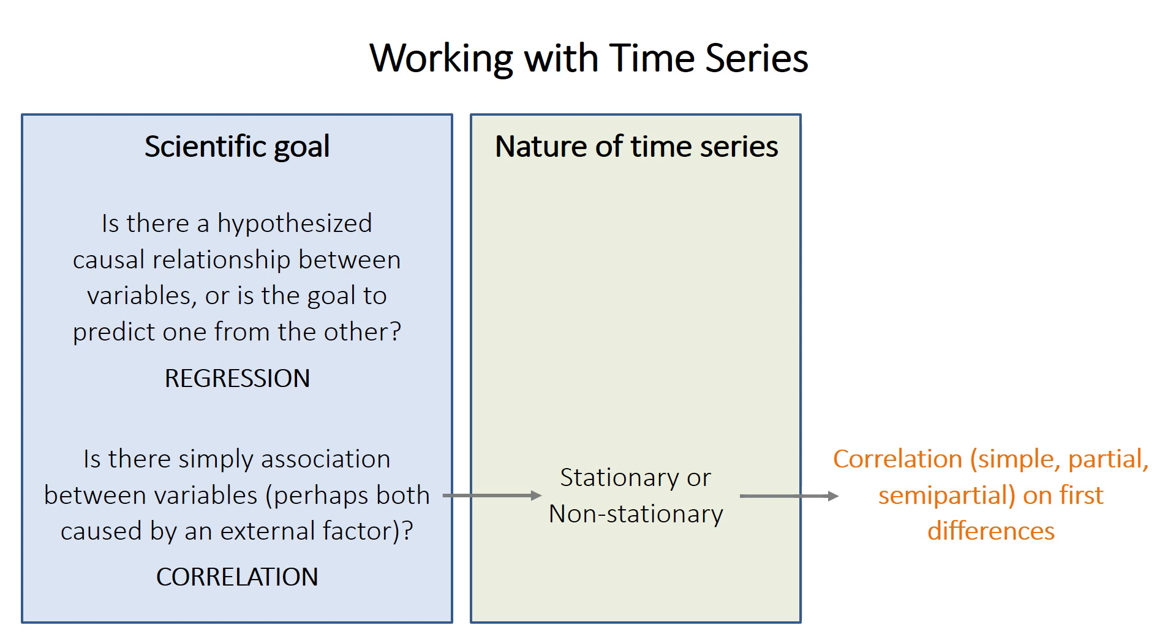But you should plot the first differences as a scatter plot, one variable versus the other, to choose between parametric and non-parametric correlation. So not the raw data, but if the relationship between the first differences is curved, or if the first differences themselves are not normally distributed, then you can run a non-parametric correlation.